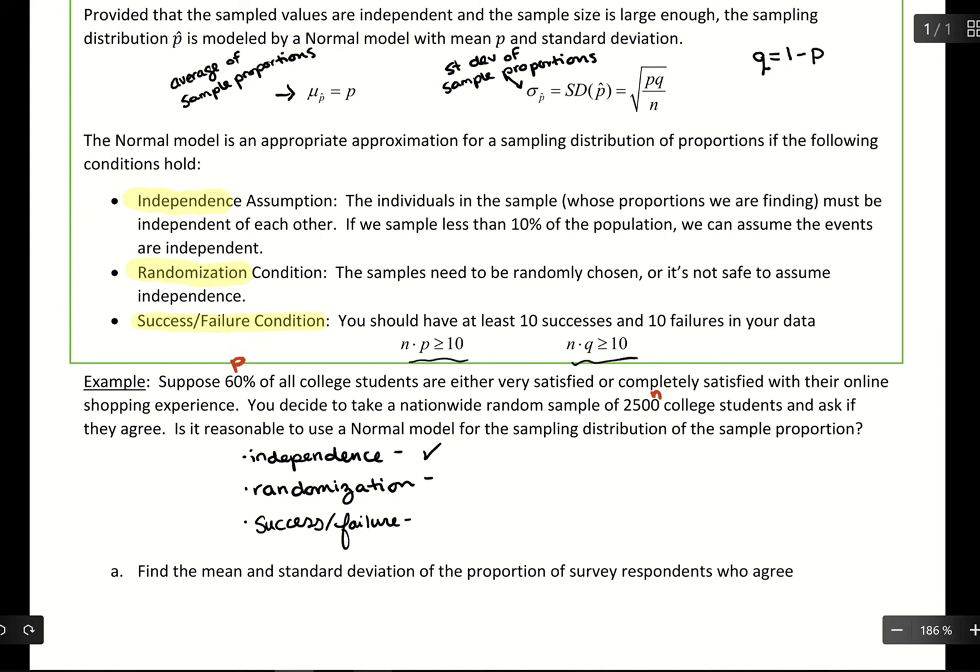Randomization, here we can actually check it out because it says the word random there. So we definitely know we have randomization. And then for the success failure condition, what we want to do is take 2,500 times our probability of success, that 0.6, and take 2,500 times, and then we want 1 minus that value. So P and Q should always add up to 1 there. This is going to be 1,500, and this will be 1,000. Both are larger than or equal to 10. So we're good there.